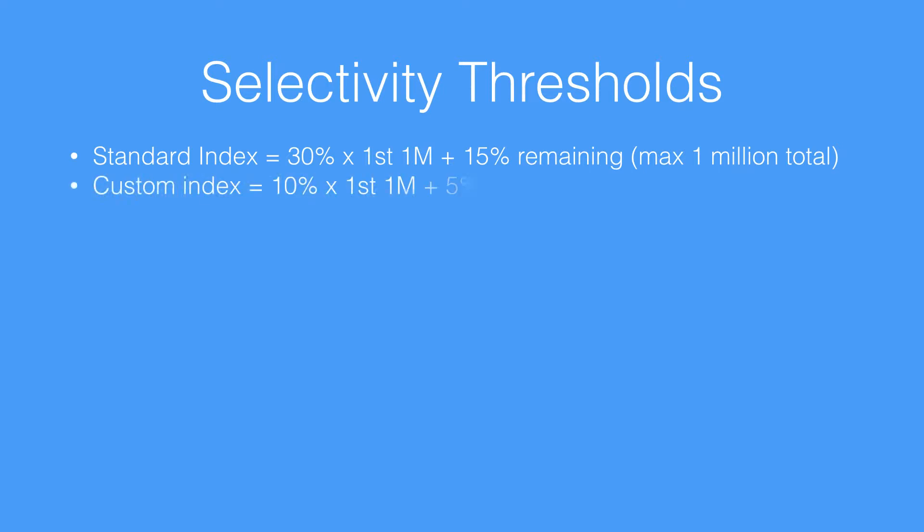Similarly, if you're working with a custom index, it's allowed to take 10% of the first 1 million records and 5% of the remaining records within the system, with a max of 333,333 records. The reason we have these two limits, and the reason the custom index limit is slightly lower, is that Salesforce requires more work on that side. It's so that we can ensure that when we're doing queries, they are performant and returning results in an optimal manner, so that it's not slowing down the query system for everyone else.